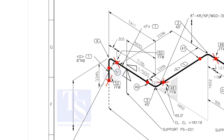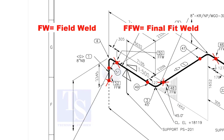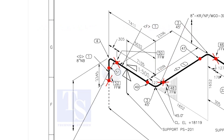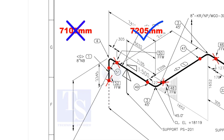In the drawing, you can see the terms FW and FFW. FW stands for field weld. FFW means final fit weld — an additional length of pipe is added to the calculated dimension as an FFW for field trim allowance. As per the drawing, the length of this pipe is 7105 millimeters, but we will fabricate a minimum length of 7205 millimeters.